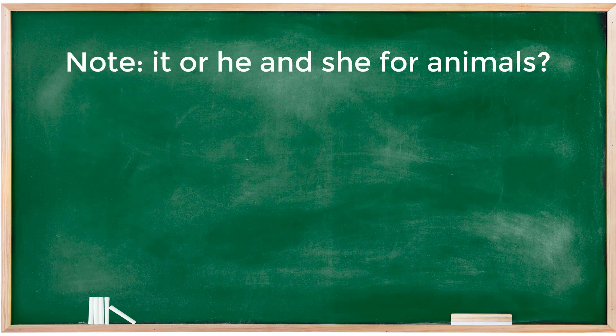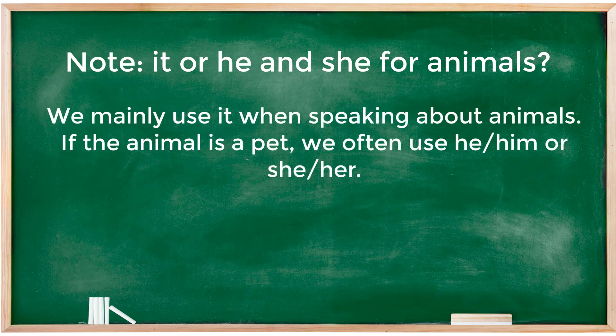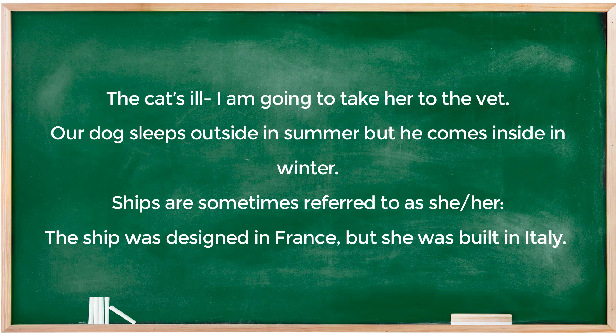It, he, and she for animals: we mainly use 'it' when speaking about animals. However, if the animal is a pet, we often use 'he', 'him', or 'she'. For example: 'The cat's ill, I am going to take her to the vet.' Another example: 'Our dog sleeps outside in summer, but he comes inside in winter'.